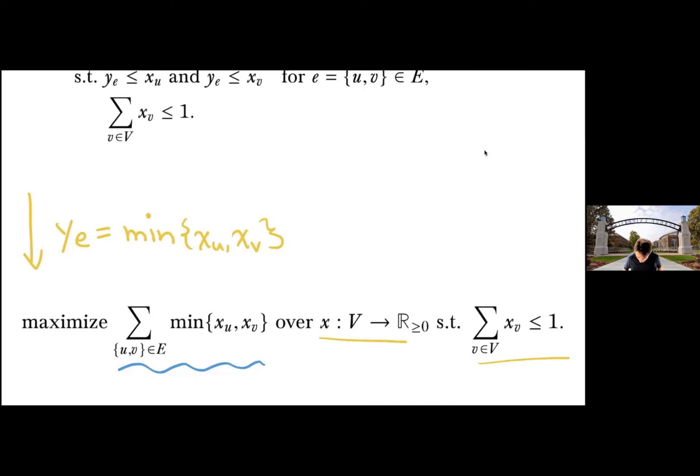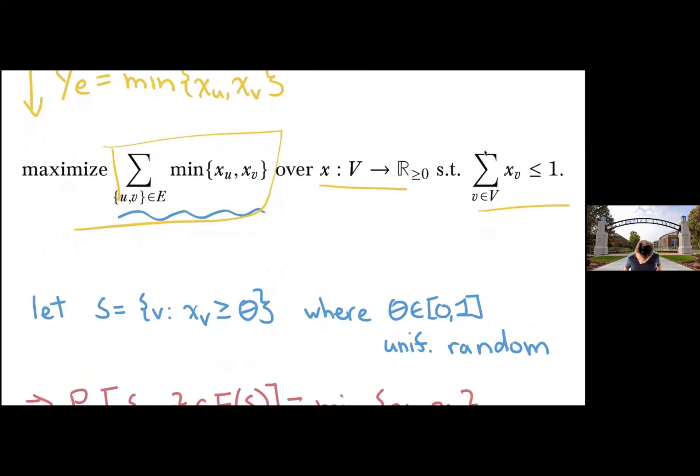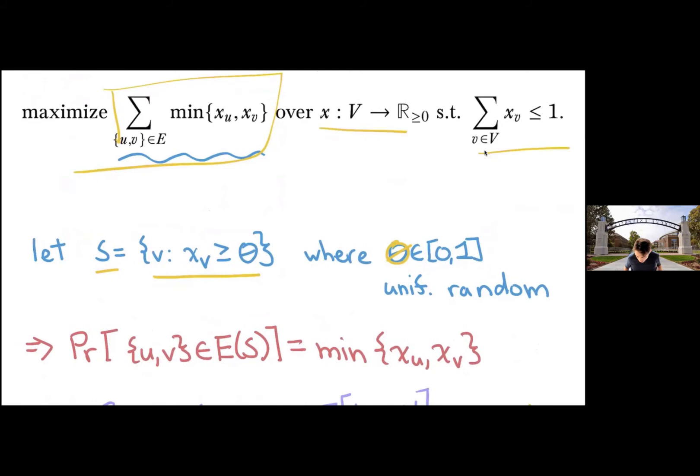Consider the following random experiment. Let S be a random set. I'm going to draw a value of theta in zero one uniformly at random. And I'm going to take all the vertices of weight at least theta, given a fixed X. Then the probability that both of the endpoints are going to be in S, or that the edge is in S, is the minimum of the two values.